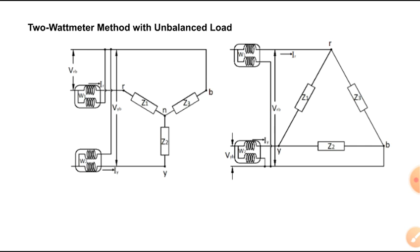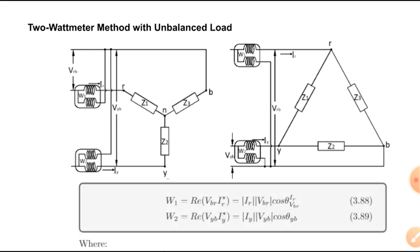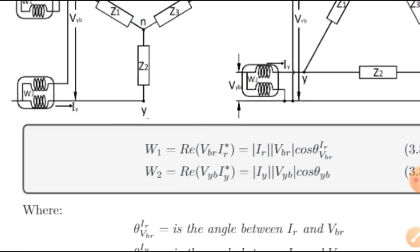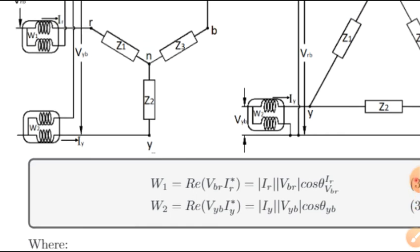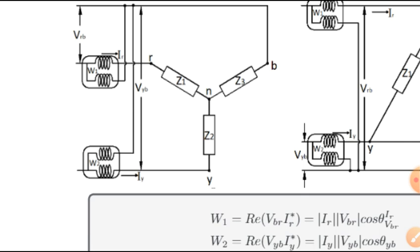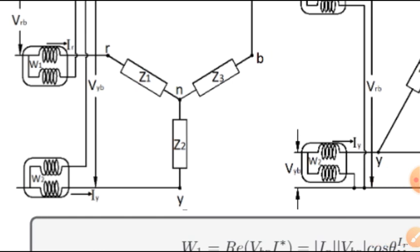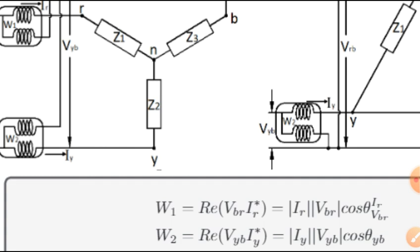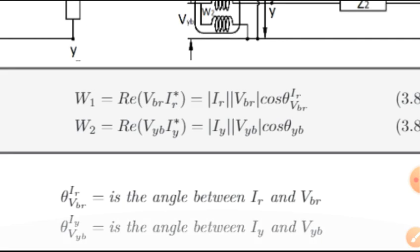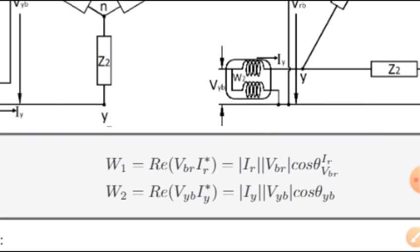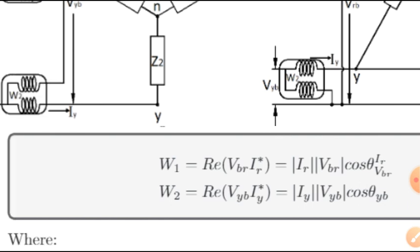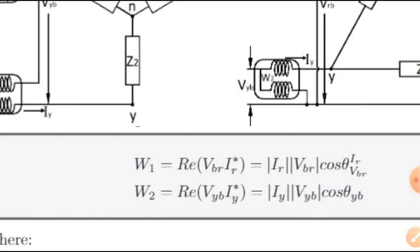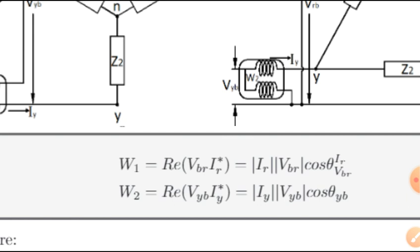For the 2-wattmeter connection (unbalanced case), we have W1 and W2. The current passing through W1 is I_R and the voltage at W1 is V_RB. For W2, the current is I_Y and the voltage is V_YB. In delta connection it's the same pattern. The power readings are: W1 = |I_R| × |V_RB| × cos(θ), where θ is the angle between I_R and V_RB; and W2 = |I_Y| × |V_YB| × cos(θ) where θ is the angle between I_Y and V_YB.